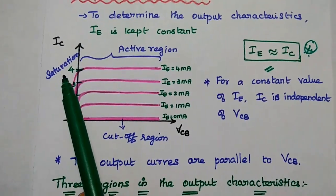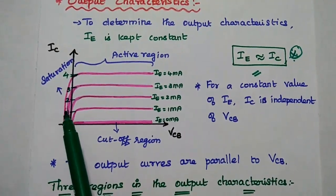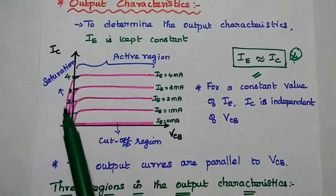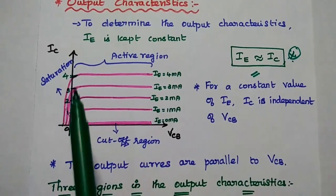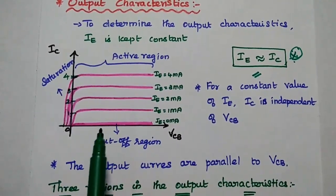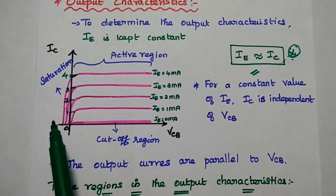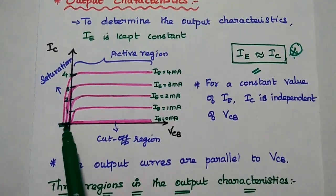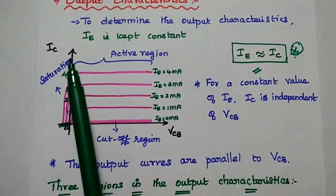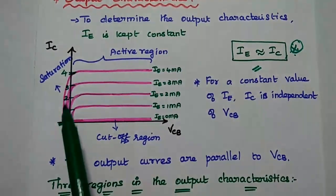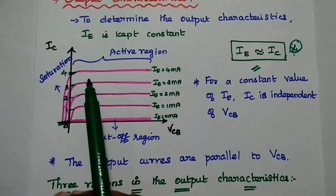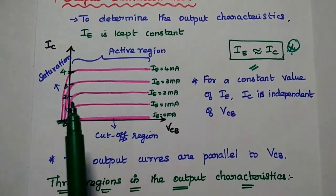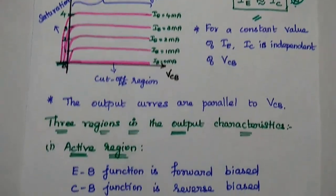The third region is the saturation region. In this region, the output current increases exponentially as the output voltage increases towards zero. The collector current increases exponentially with a smaller change in VCB. That is called the saturation region.